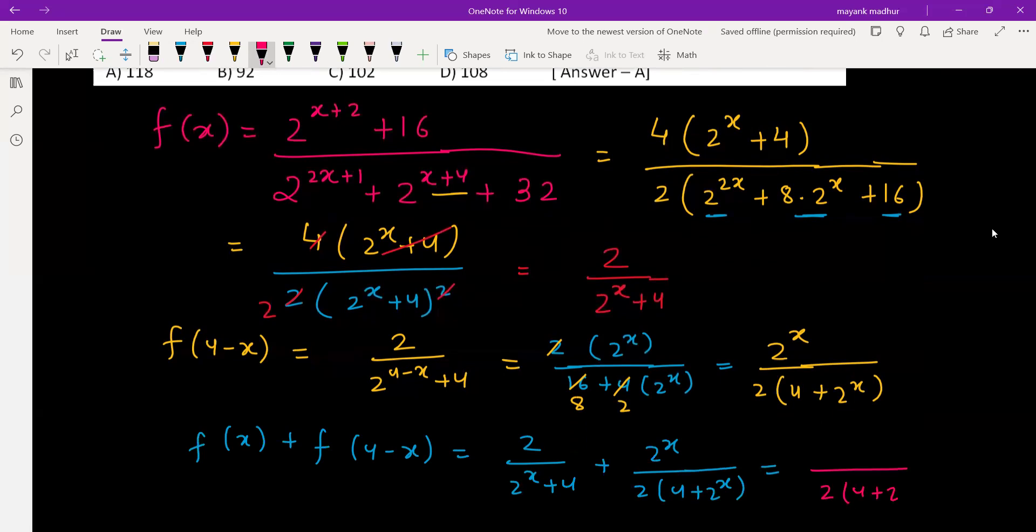So we can take this common: 2 times (4 plus 2 raised to x). And this will be 4 plus 2 raised to x, so it is one half.